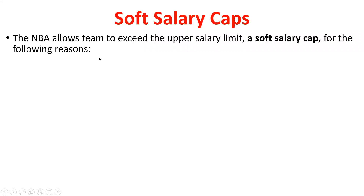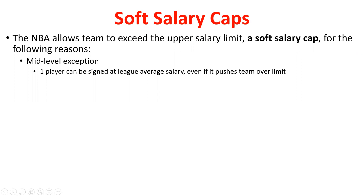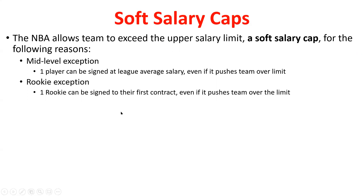In the NBA, there is an upper salary limit, but they call it a soft cap — certain criteria, if met, means that money doesn't count against the cap. There's a mid-level exception: you can go over that upper limit if it's to fill your roster with one more player at the league average. The league allows you to sign one more player even if it pushes you over the limit, just to make sure you can fill out your roster.